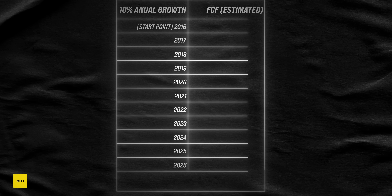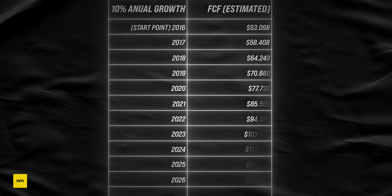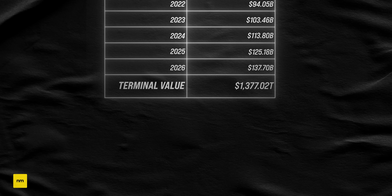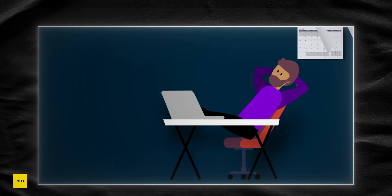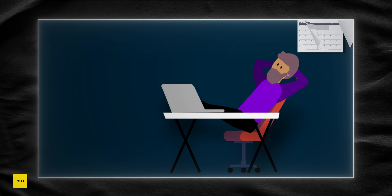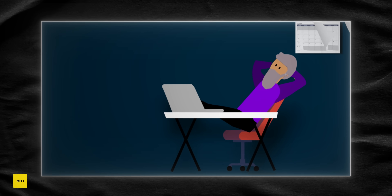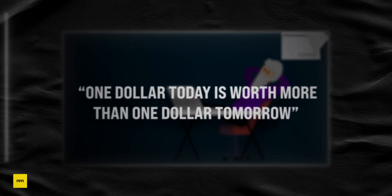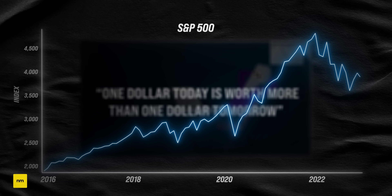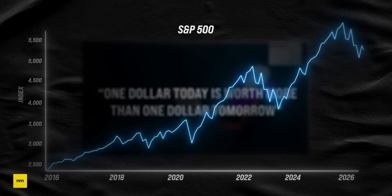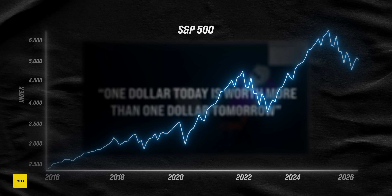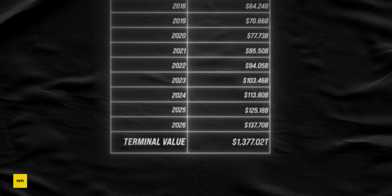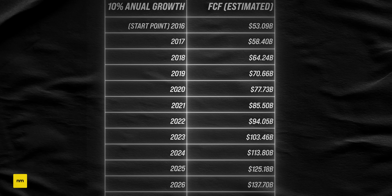We've now estimated the business's future cash flows and what we'll be able to sell it for in 10 years — but those cash flows are not actually worth that amount to us sitting here today. The reason is we have to wait several years to actually get them. As they say, one dollar today is worth more than one dollar tomorrow. If we had those cash flows today we could put that money to work in the stock market and turn it into a lot more by the year we're actually expected to receive them. So we need to account for the fact that the further away these cash flows are, the less they are worth to us today.